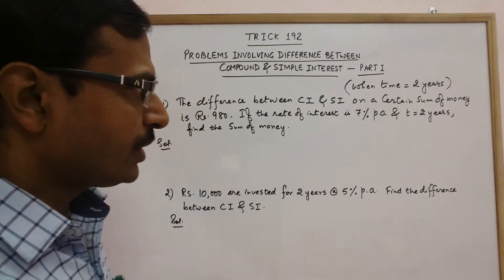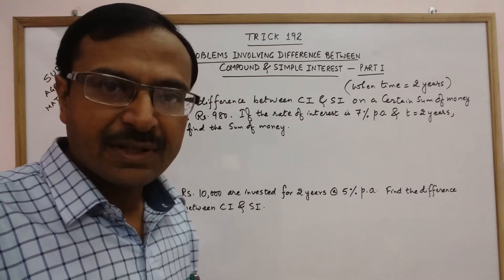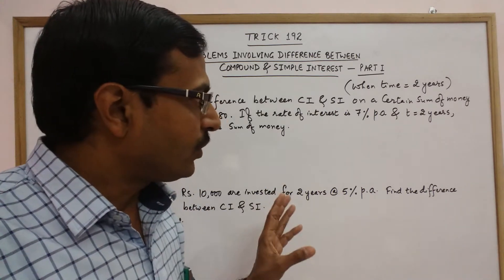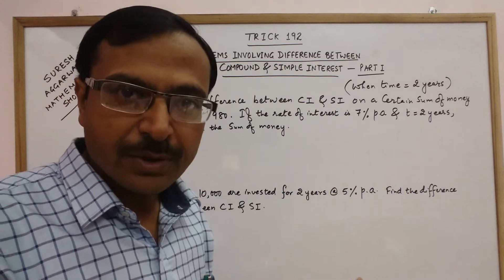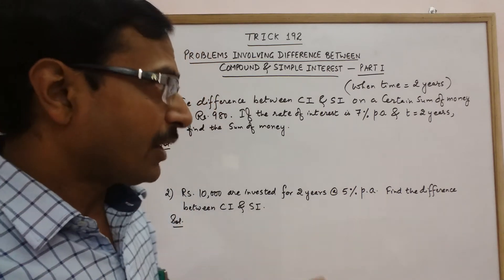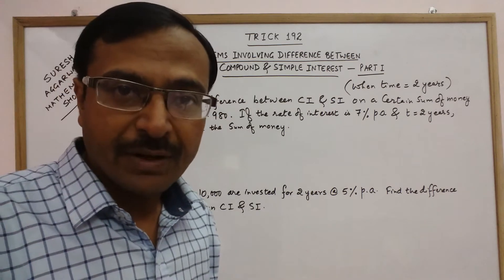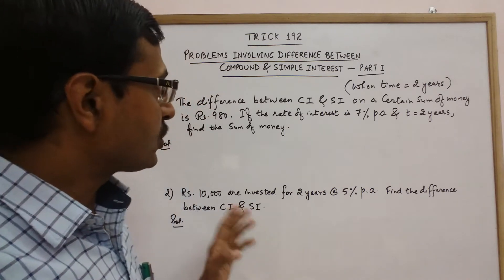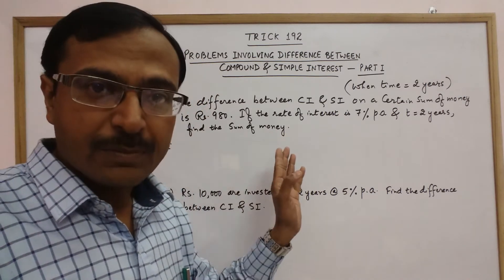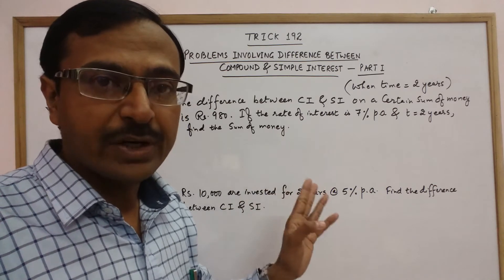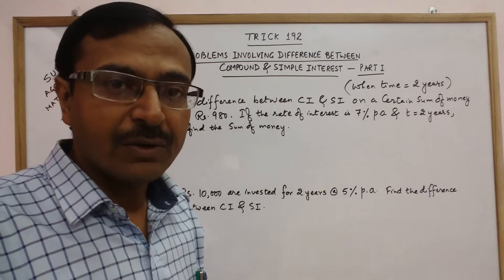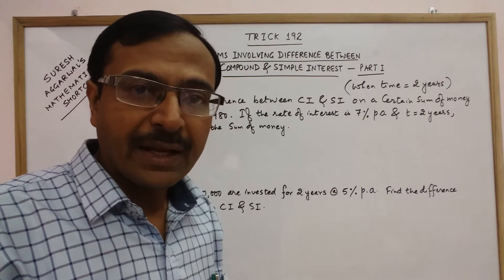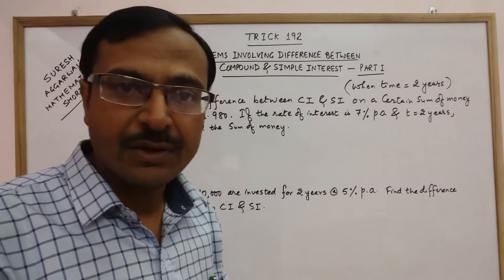Students in class 7th or 8th level study this topic for the first time and apply the traditional method, but those methods cannot be applied at competitive level. You need to have a trick up your sleeves so that you can solve the problems involving the difference of compound and simple interest in just 3 to 4 seconds without applying any lengthy calculations and formulas.